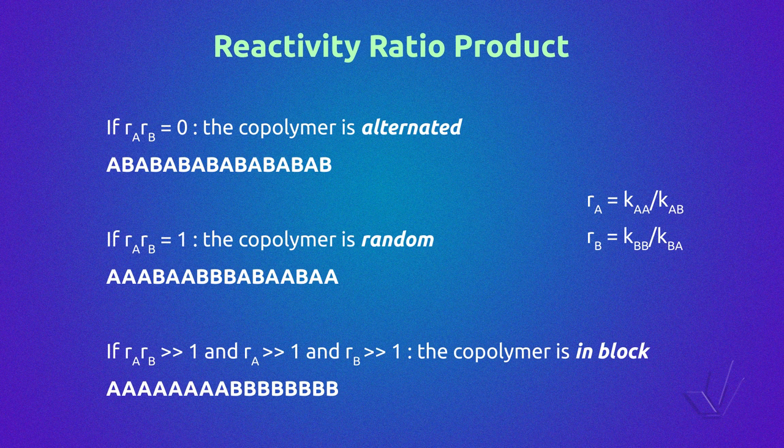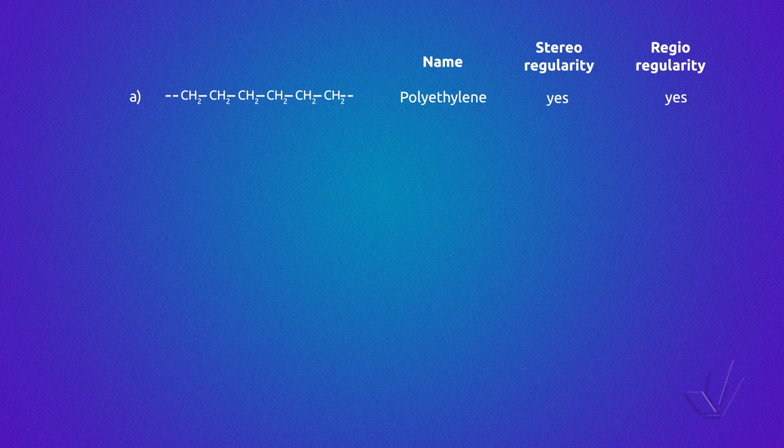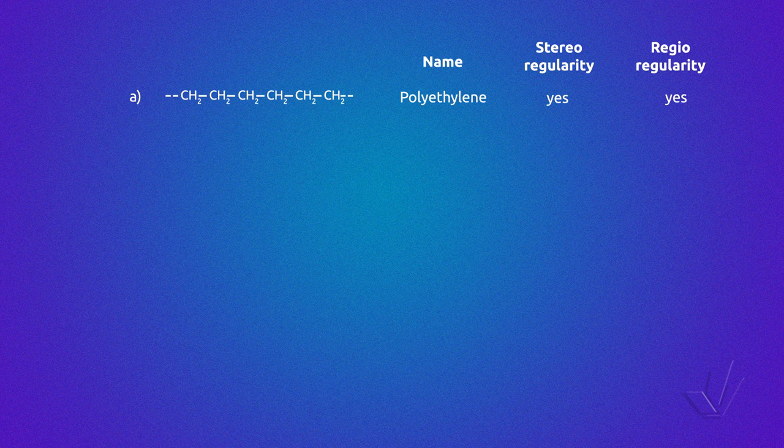Now that we have seen what can be calculated from a carbon-13 NMR spectrum, we are going to see the influence of copolymer structure on the spectra. The complexity of the carbon-13 NMR spectrum increases from a homopolymer to a copolymer. For example, when we have a high density polyethylene where there is no branching, all the carbons CH2 are equivalent, so the spectrum has just one peak of resonance.